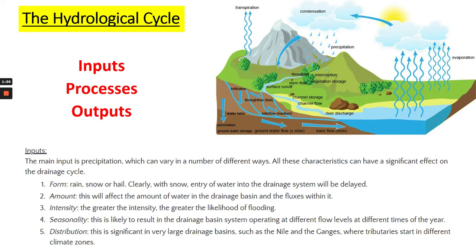The first idea is inputs. The main input in any hydrological cycle is precipitation — that can be rain, sleet, hail or snow — and that has a significant impact on the hydrological cycle. With snow, the entry of water will be delayed because it has to melt. So different forms of inputs include rain, sleet, hail or snow. The amount will also affect it, so if there is a high amount of rainfall in the area that will affect the drainage basin and the fluxes within it.